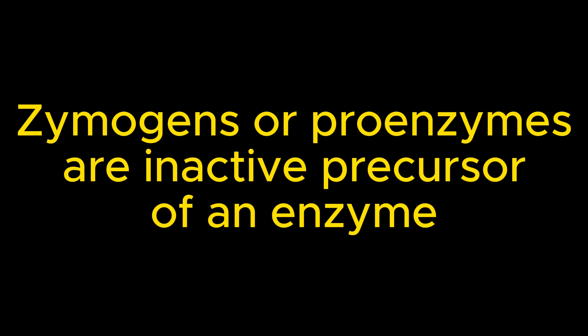Overall, any enzyme in its inactive state that requires activation for it to carry out its specific function is called a zymogen. A zymogen in that inactive state cannot carry out its catalytic function until it is activated. In this topic, we are going to be looking at how we can activate an inactive enzyme, which is a zymogen, and what mechanisms we can use to activate these inactive enzymes.